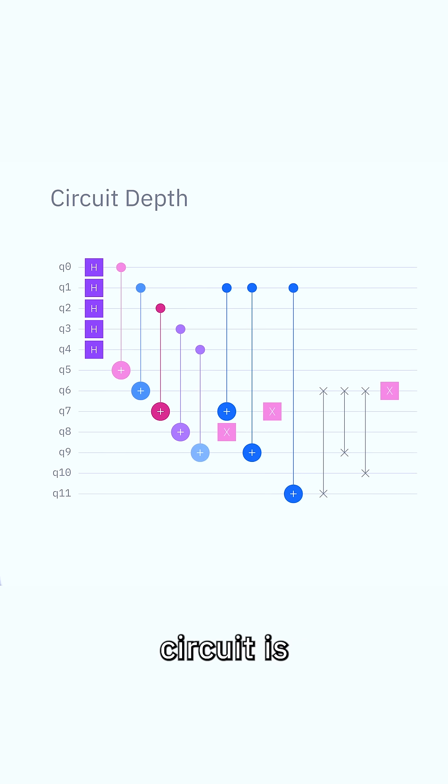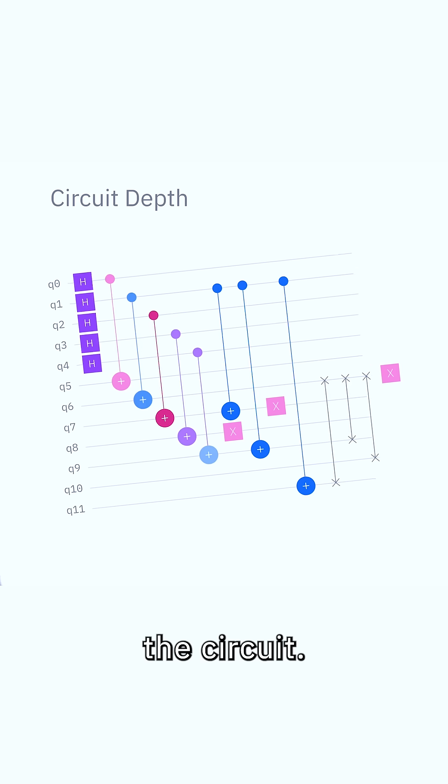The depth of a quantum circuit is the minimum number of layers of quantum gates executed in parallel required to complete the computation defined by the circuit.